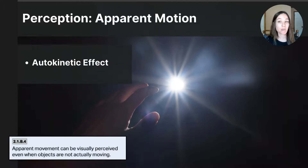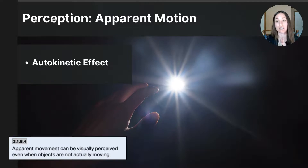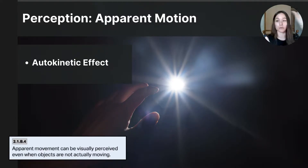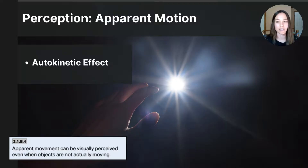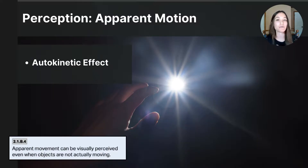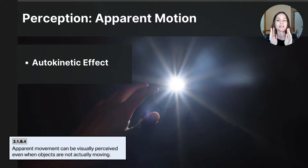The last example of apparent motion is the autokinetic effect — the illusion of movement that occurs when a stationary light in a dark environment seems to move on its own. This effect happens because in the absence of a stable reference point, our eyes and brains start to perceive slight movements as significant. As you sit in a dark room staring at a single small light such as a dim LED, the light might appear to move or dance around. Without a frame of reference, tiny involuntary eye muscle movements lead to the perception that the stationary light is moving.